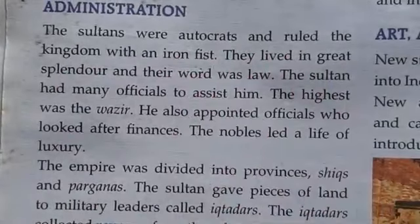During the Sultanate period, the different dynasties in their reign period — the sultans were autocrats and ruled their kingdoms with an iron fist. They lived in great splendor and their word was the law. The sultan had many officers to assist him, and the highest was the wazir, or prime minister.